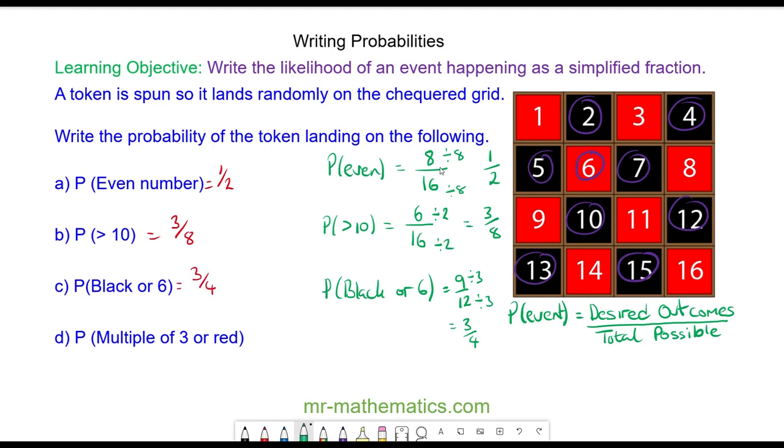And the last one, the probability of a multiple of 3 or red. The multiples of 3 include 3, 6, 9, 12, and 15, plus the red which are 1, 8, 11, 14, and 16, which includes 10 desired outcomes in total. So 10 out of the 16 which are possible. We can simplify this fraction by dividing both by 2, so we have 5/8.